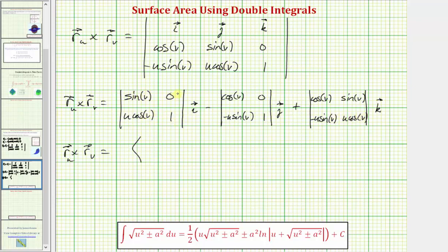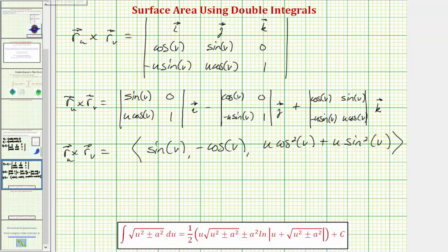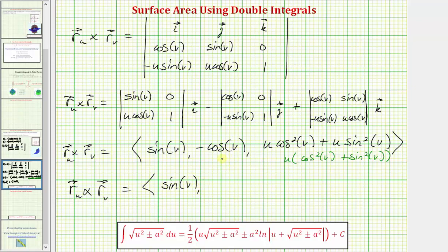The x component is sine v times one minus zero times u cosine v, which is sine v. For the y component, the determinant is cosine v minus zero, giving cosine v, but with the minus sign it becomes negative cosine v. For the z component, we have u cosine squared v minus negative u sine squared v, which is u cosine squared v plus u sine squared v. Factoring out u gives u times the quantity cosine squared v plus sine squared v, which equals one. So the z component simplifies to just u.